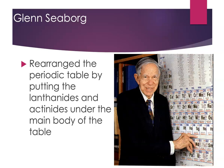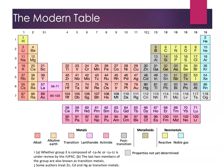One last change to the periodic table worth mentioning is the work of Glenn Seaborg, the American chemist who rearranged the periodic table by taking the lanthanides and the actinides out of the main body of the table and putting them underneath in their own little section. That leads us to the modern depiction of the periodic table: columns and rows, with the lanthanides and actinides down below in their own little table.